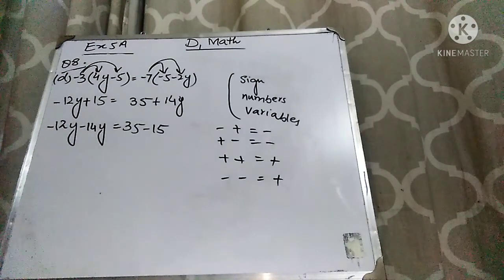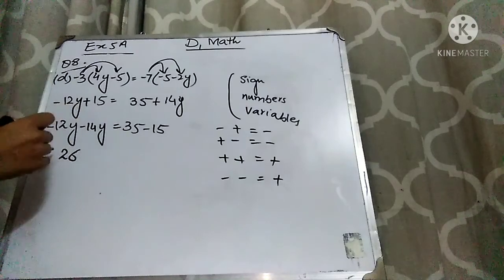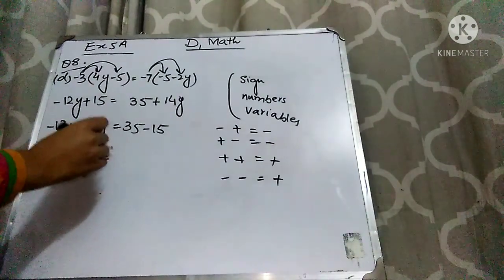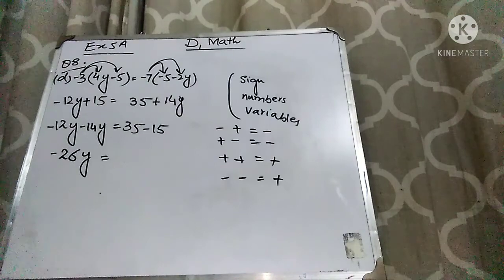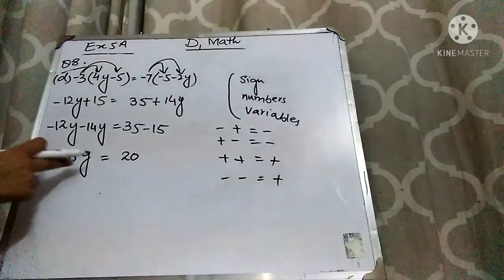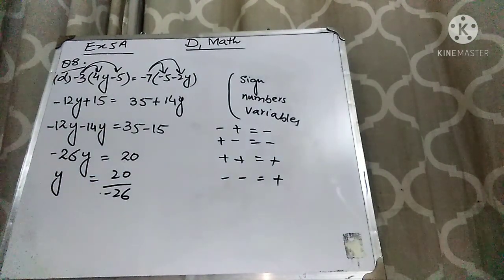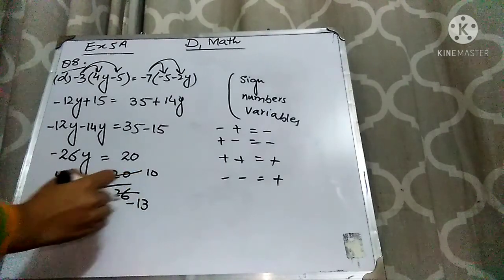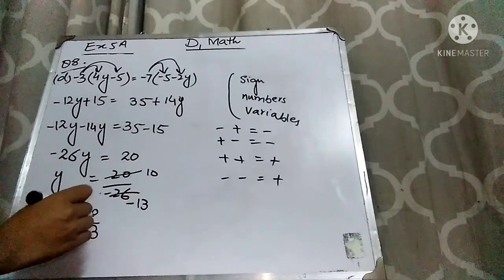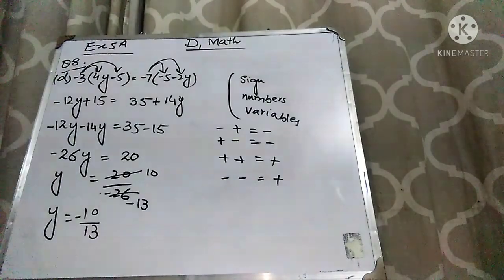Minus minus is plus, so I add 12 and 14 to get 26, and write the minus sign. Plus minus is minus, so I subtract 15 from 35 to get 20, and write the plus sign. So minus 26y equals 20. This 26 is multiplying with y; when it goes to the other side it will divide. 20 divided by minus 26 — reduce by dividing both by 2: 10 over minus 13. So y equals minus 10 over 13. I hope Part D is clear.